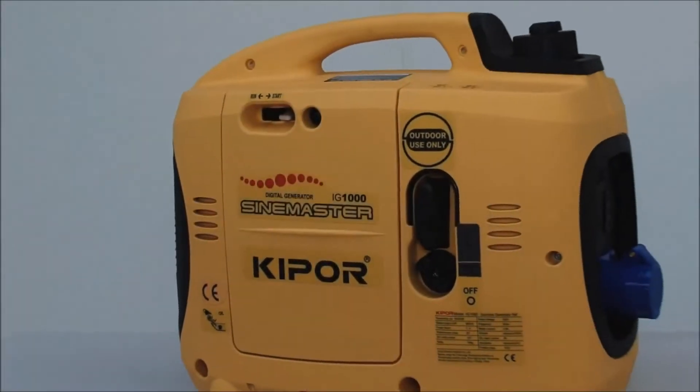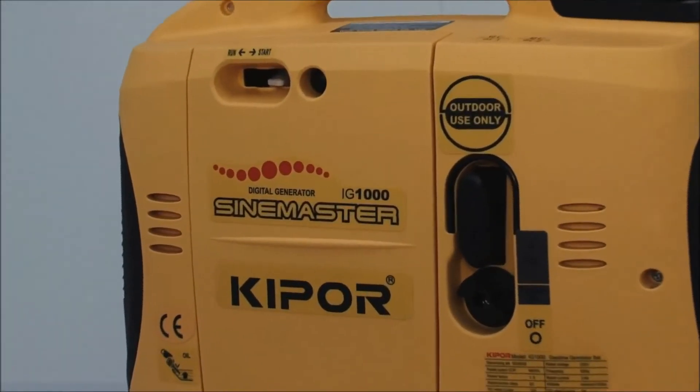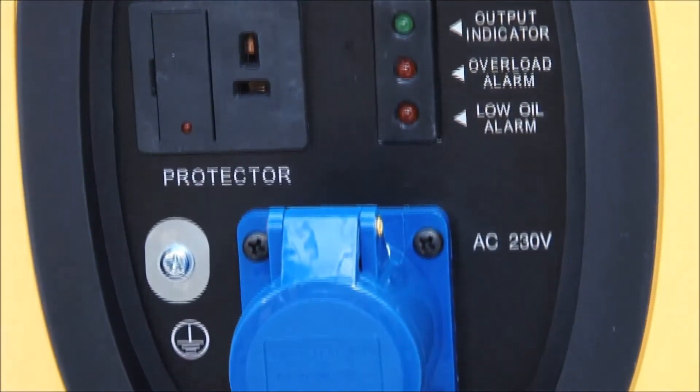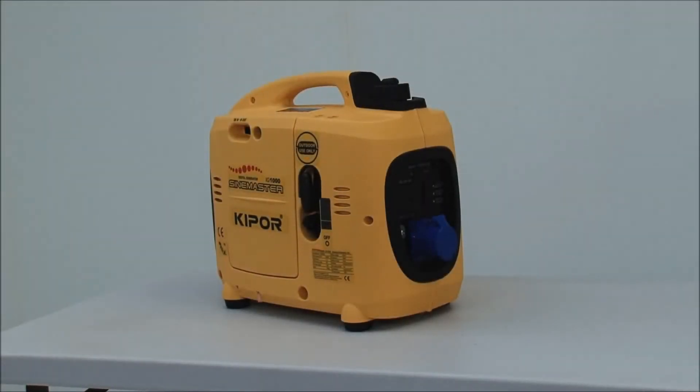Now we're going to do an oil change on an IG-1000 suitcase generator. This principle is the same for the IG-2000 and the IG-2600.